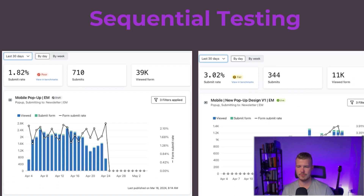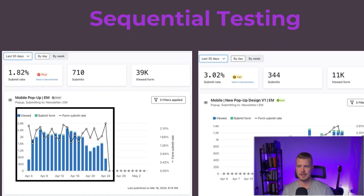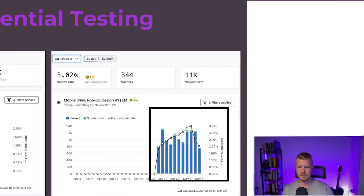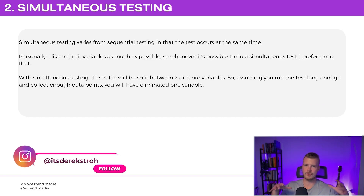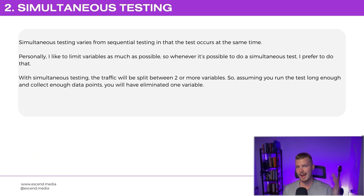Sequential testing might look like this — we ran a test until April 24th on one pop-up and then had another one start right after. Simultaneous testing, on the other hand, occurs at the same time. I like to limit variables as much as humanly possible, so whenever it is possible to do simultaneous split tests, I prefer to do that.